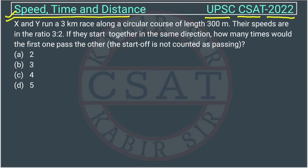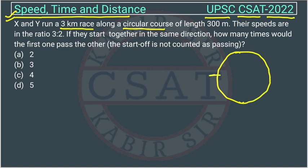X and Y run a three kilometer race along a circular course. Suppose this is the starting point — X and Y are standing here. One round of the circular course is 300 meters.